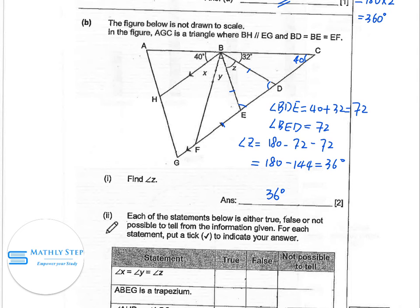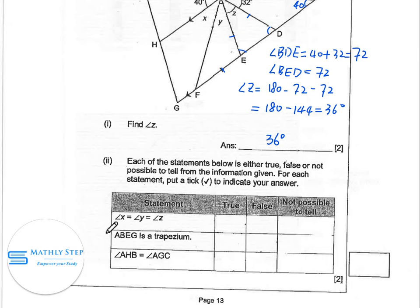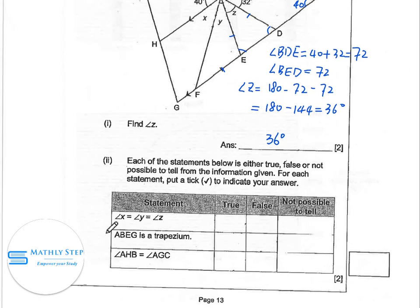Question 2. Each of the statements below is either true, false or not possible to tell from the information given. For each statement, put a tick to indicate your answer. Statement 1. X, Y, Z are equal.